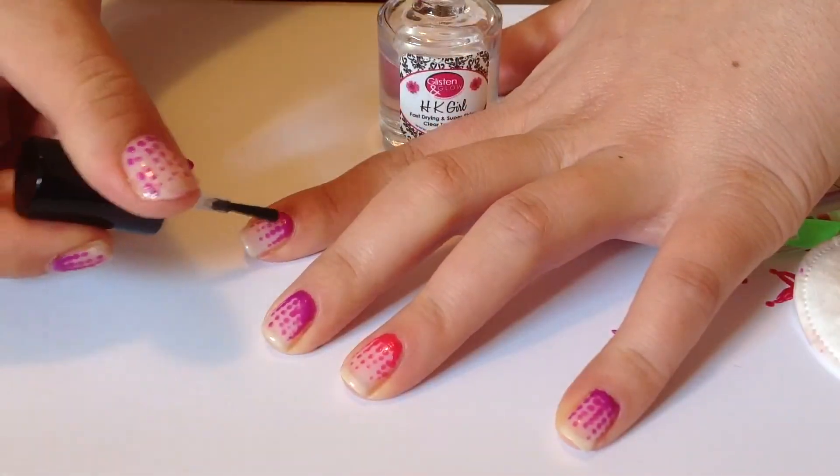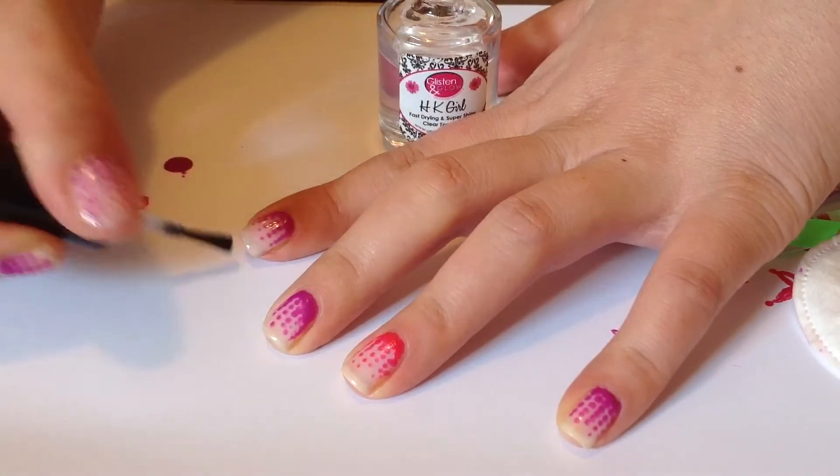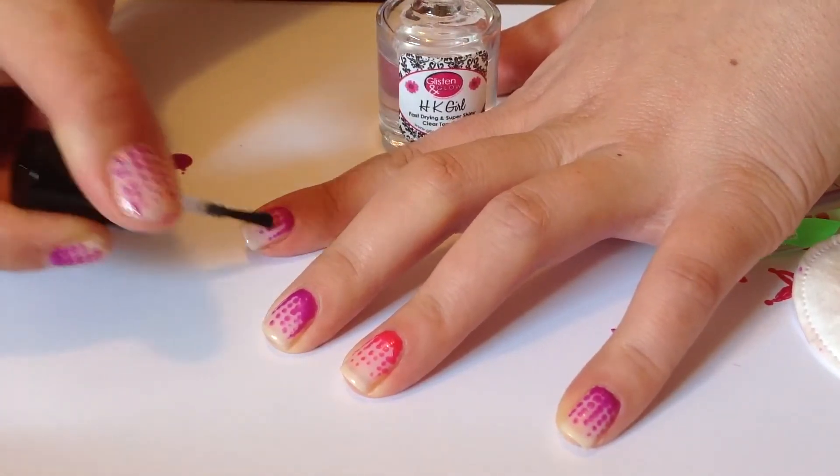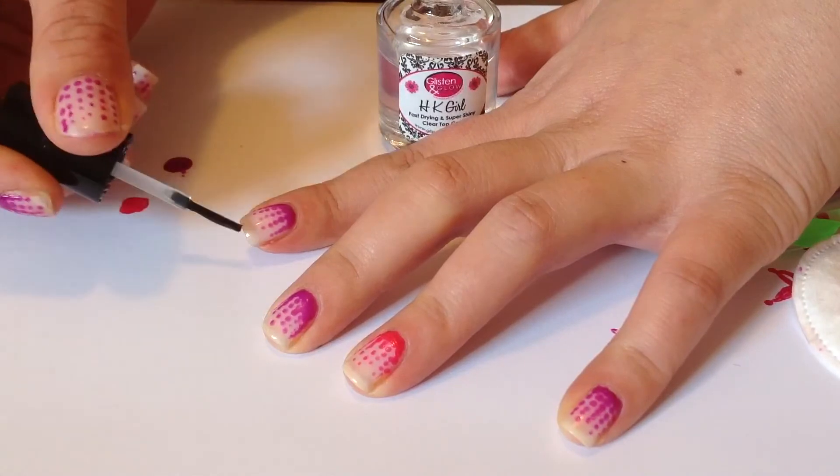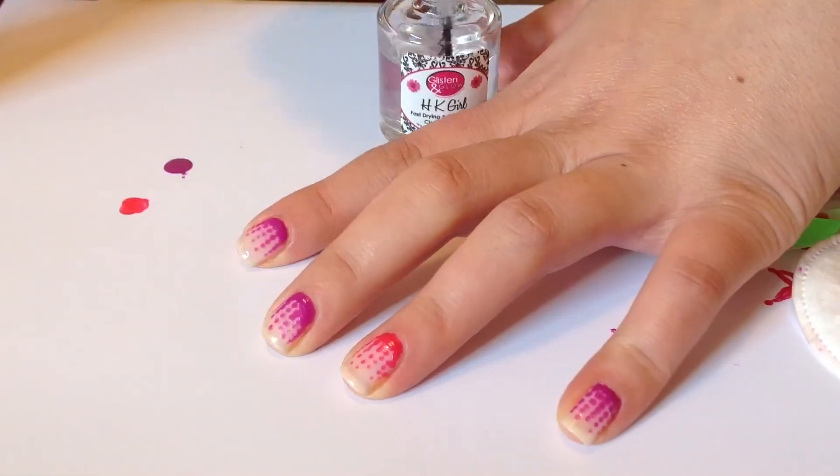Now when I filled in the bottom of my non-dominant hand, I used a toothpick just to make sure that it was really neat because I needed a little bit more control so I didn't get it all over my skin.